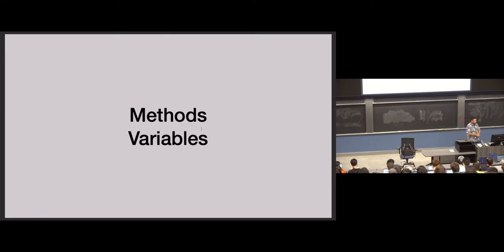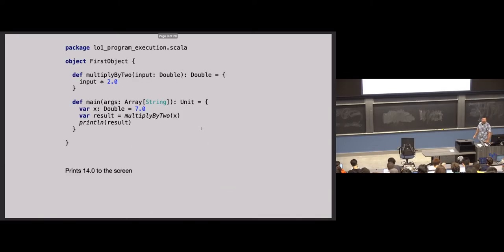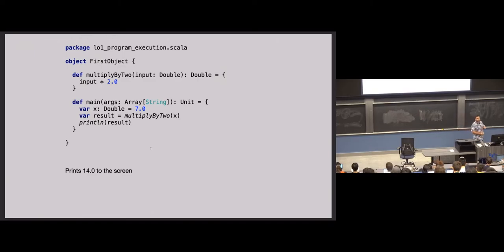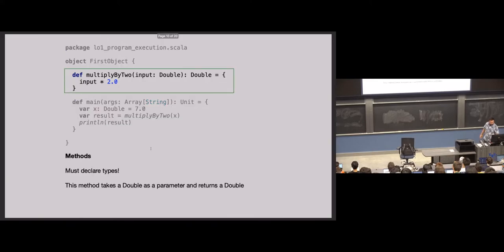Let's start talking about some module 1 and 2 topics from 115: methods and variables. I'm going to start with methods. This is the next program we're going to look at. I'm confident that even without having seen Scala, any of you could look at this program and figure out what it does. We're creating a variable named x with value 7, calling a method multiplyBy2 — which multiplies the input by 2 — result should have value 14, and we'll print 14 to the screen. I want you to be able to write code like this after this lecture.